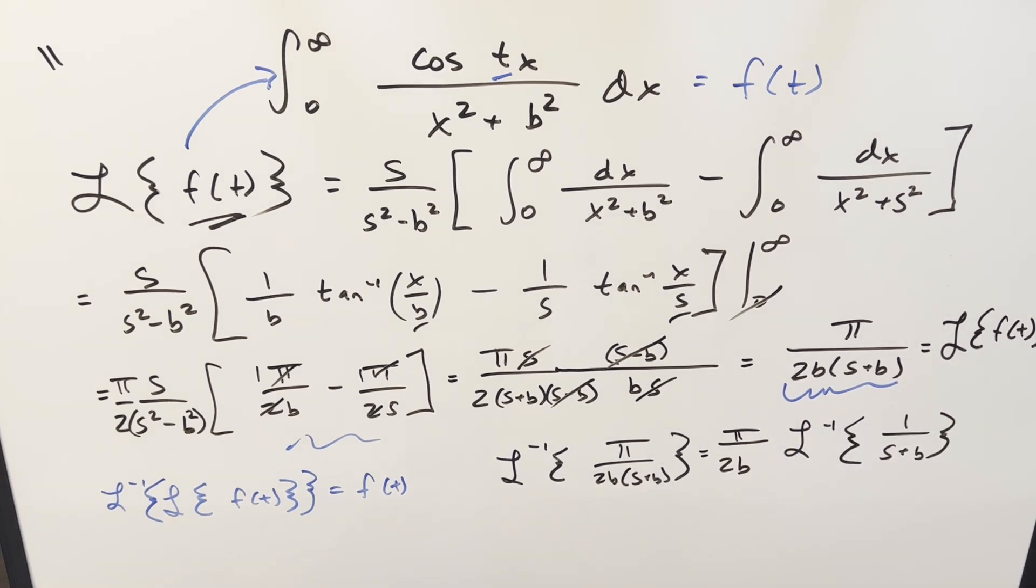And for this, you might recognize the formula. If you have something like Laplace of e to the at, this is just going to be 1 over s minus a. And so for a value on this right here, this whole thing is just going to be e to the minus bt. So let's just rewrite this, bring it into the denominator. So for the final solution of this, we just have pi over 2b e to the bt. And that's it.